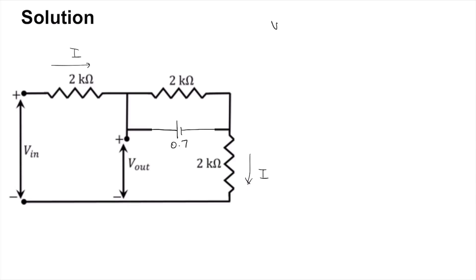So Vout can be given as the drop across this resistor plus 0.7 volt, so it will be 0.7 plus 2k times I. And what is Vin going to be? Vin is going to be Vout, this node voltage, plus the drop across this resistor 2k times I.